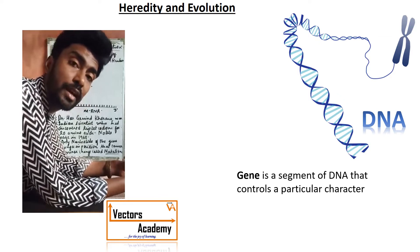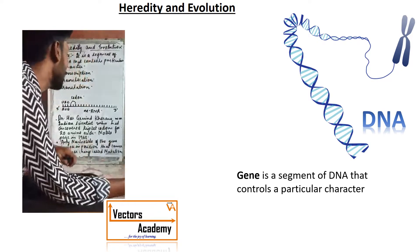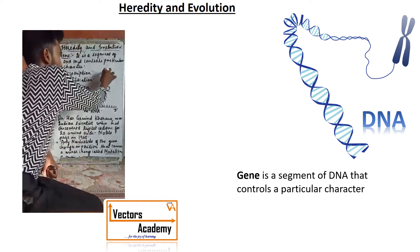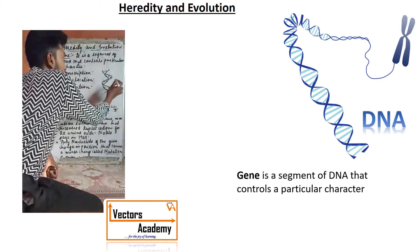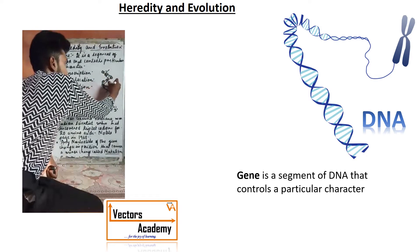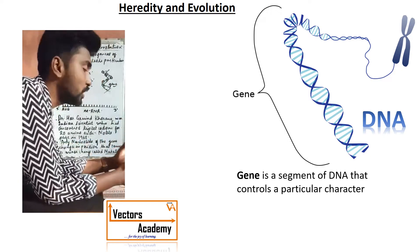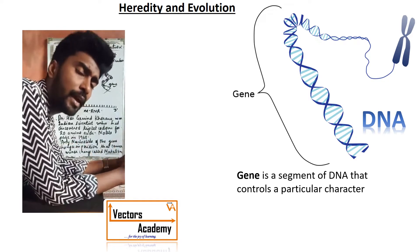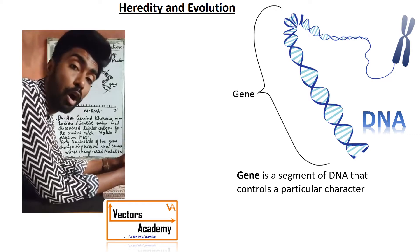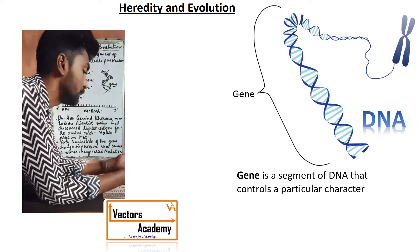What is a gene? A gene is a unit or segment of DNA that controls a particular character. This is a double-stranded DNA molecule, and it is made up of structural and functional units generally called genes. Any kind of character expressed in a living organism is under the control of a gene.